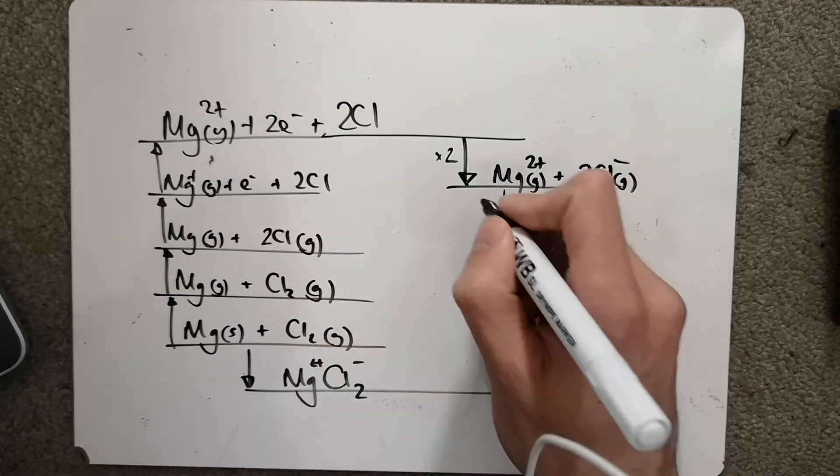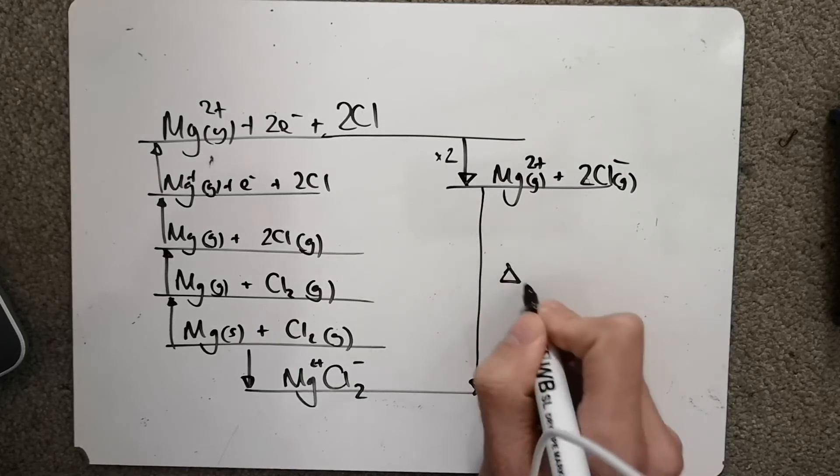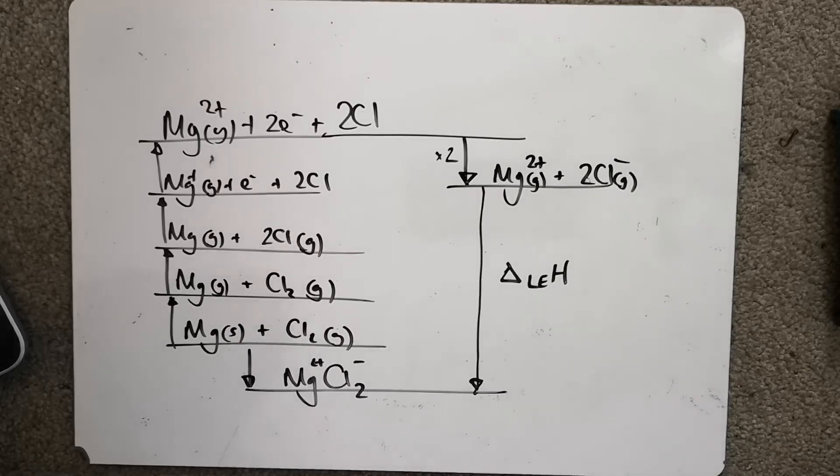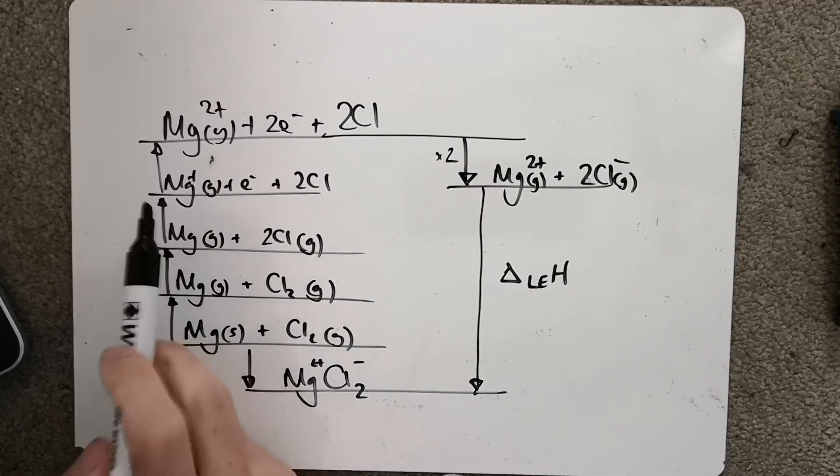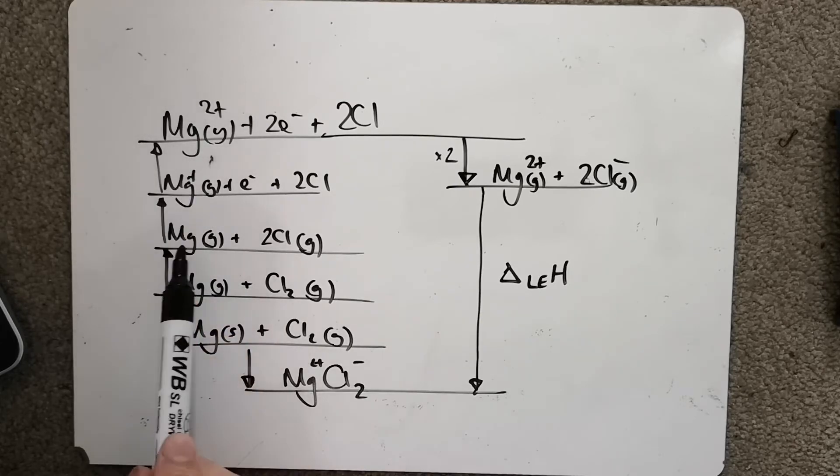And then all the way down to here is our lattice enthalpy. So a couple of tricky steps in here. First of all, we had to ionise twice the magnesium because we're trying to form a 2+ ion.